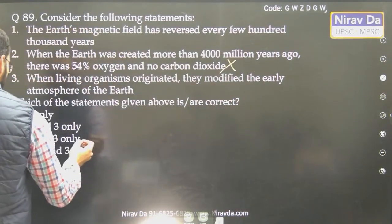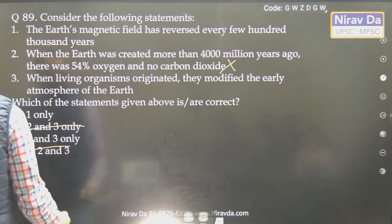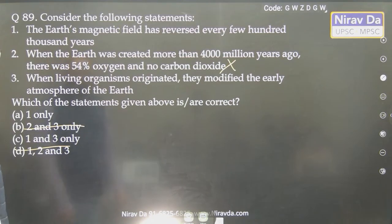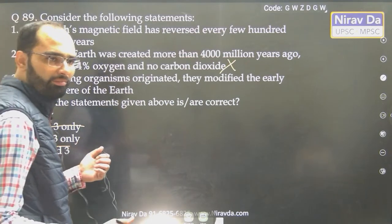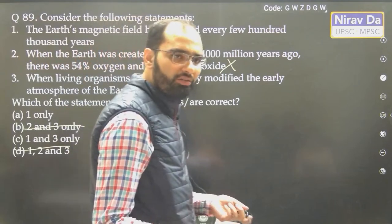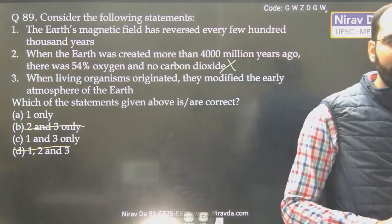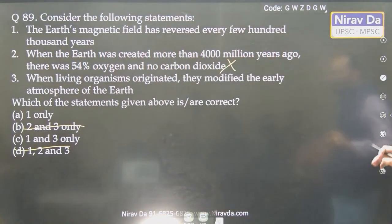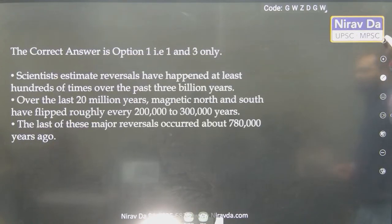There was 54% oxygen, no carbon dioxide — this is gone. When living organisms originated, they modified the atmosphere — of course they did; even right now I am breathing and modifying something. So the answer here is very straightforward and simple.